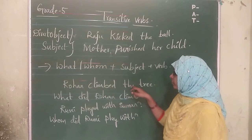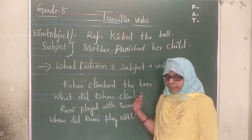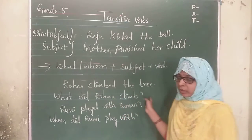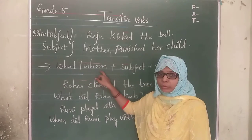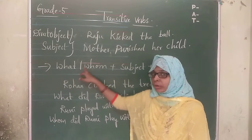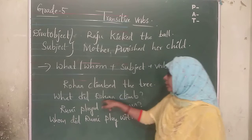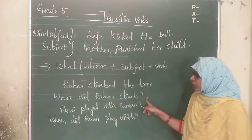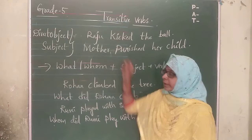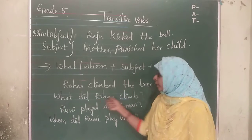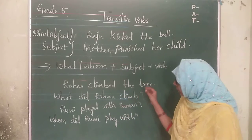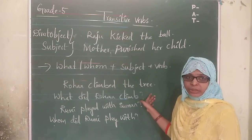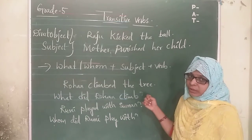Look at this example: Rohan climbed the tree. Using the formula — what or whom — we ask: what did Rohan climb? This question gives you the answer for the direct object. Rohan climbed the tree, so tree is the direct object in the given sentence.